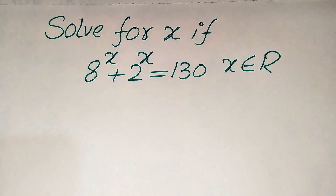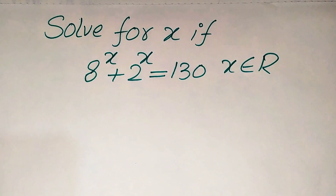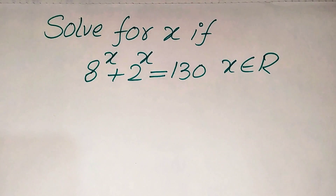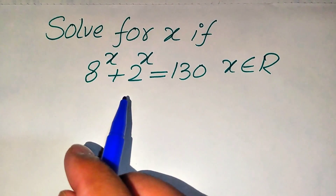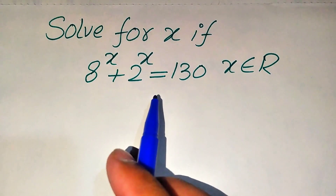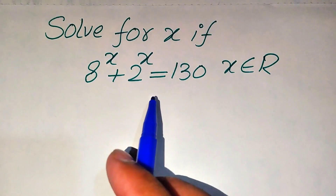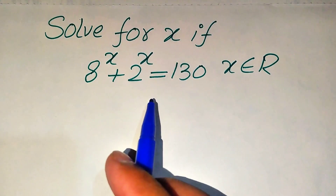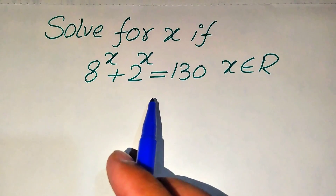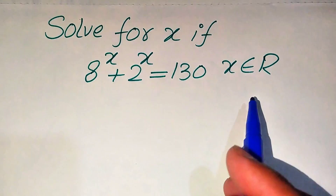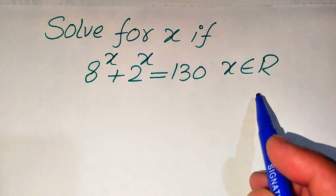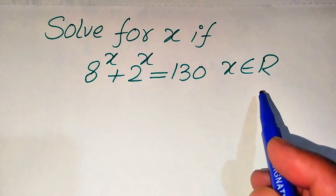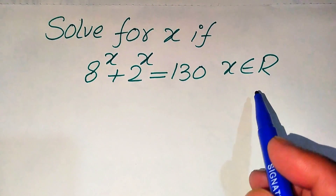Hello everyone. Today I want to show you how to solve this problem for the values of x, where 8 to the power of x plus 2 to the power of x equals 130. We solve this problem for the real values of x.